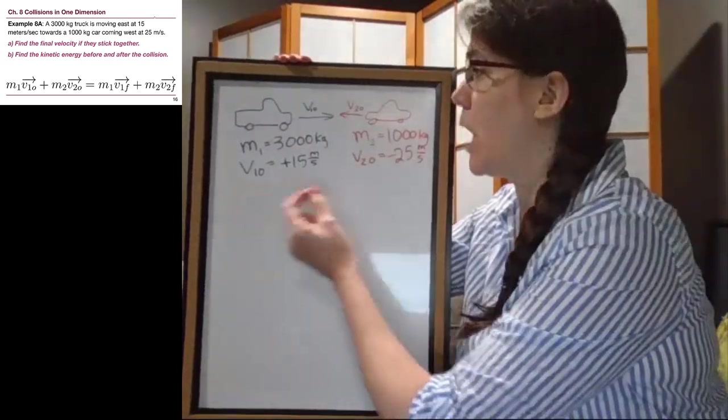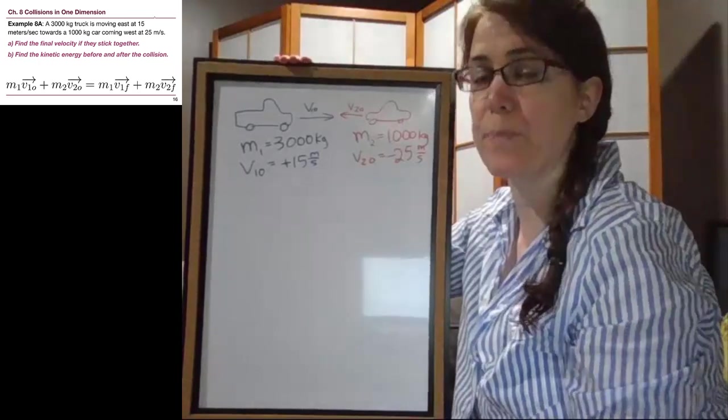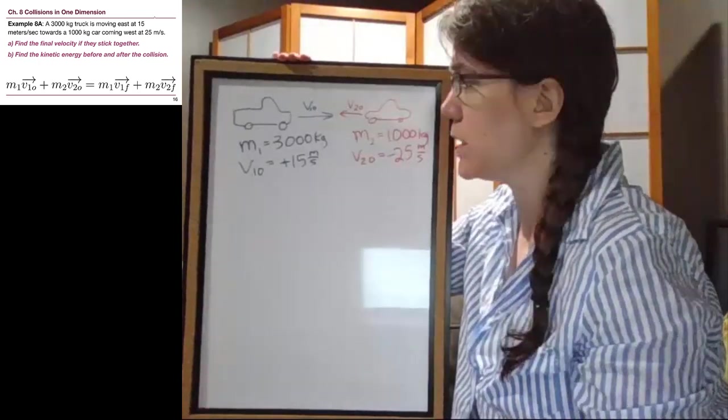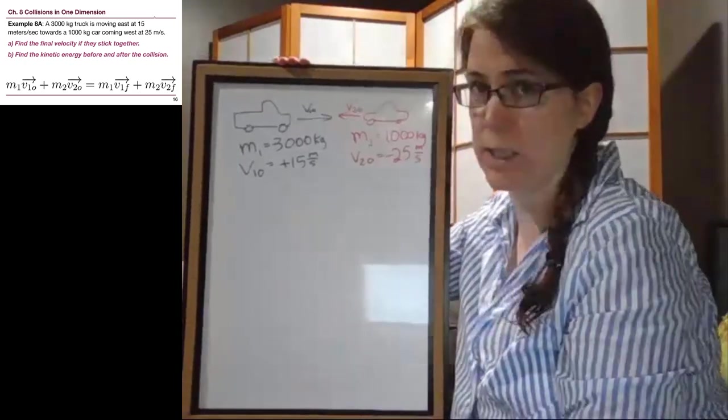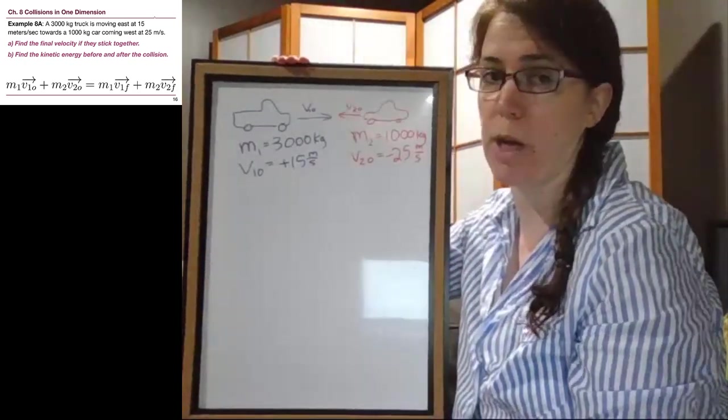If objects are moving in opposite directions, like this example, then they have to have opposite signs. Even if we decide that east and west are the other way around, one of these velocities has to be negative and the other has to be positive.